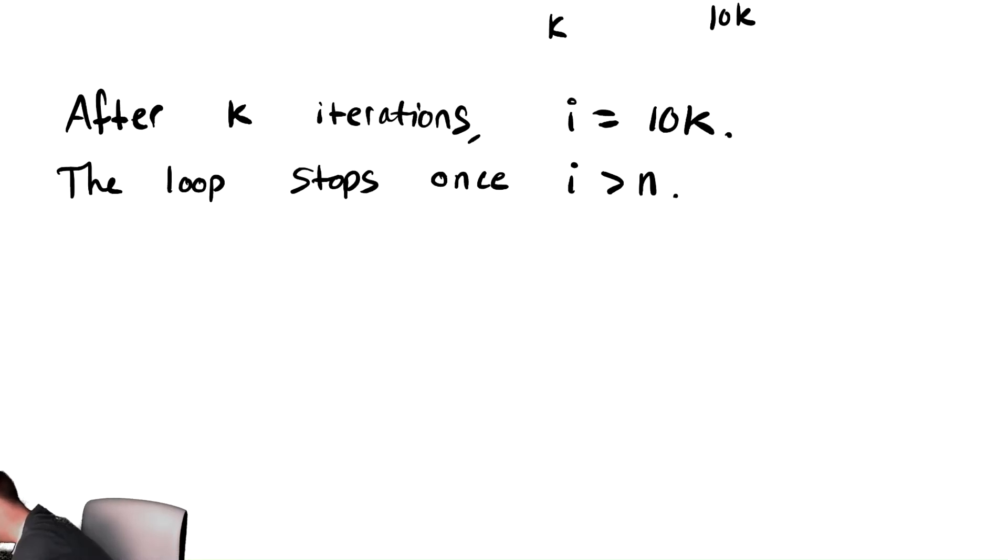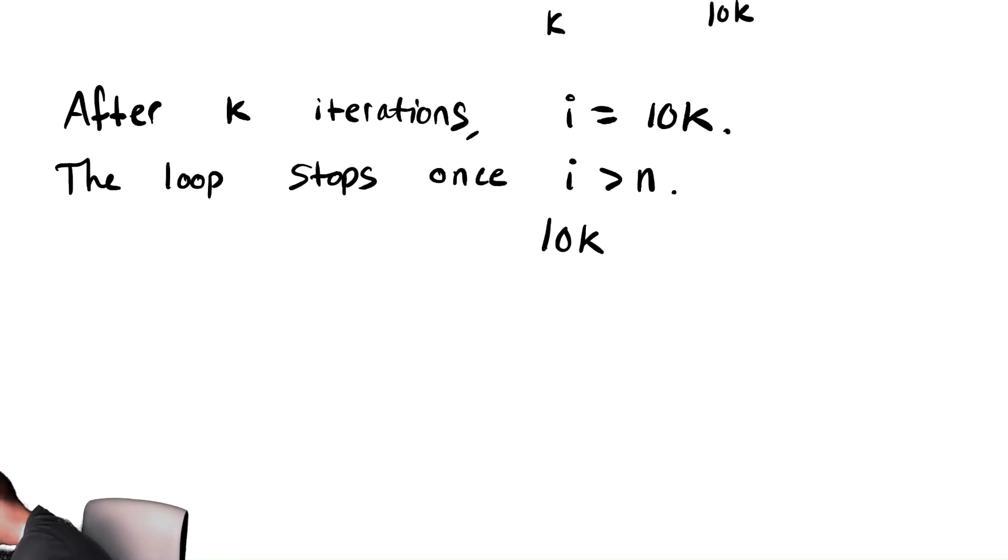But I know i is equal to 10k. So if I replace i with that, I need to find out when is 10k greater than n. So I divide by 10 and get k greater than n divided by 10. And now this is a little awkward because we need to find out what is the smallest integer that is bigger than n over 10. And that looks a little awkward. We could deal with this with floor functions and try to be mathematically precise.